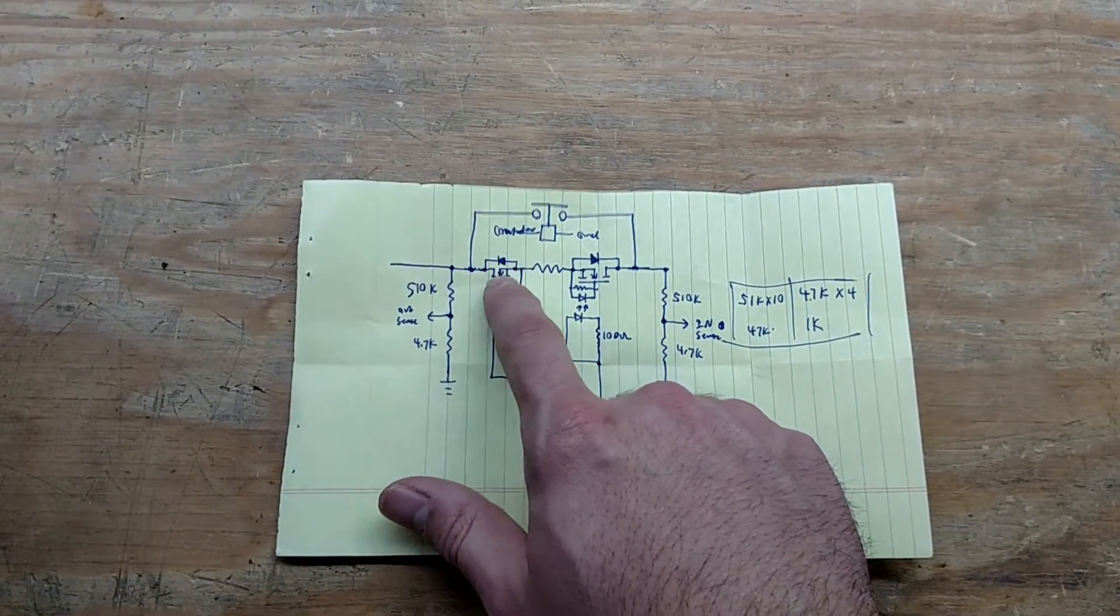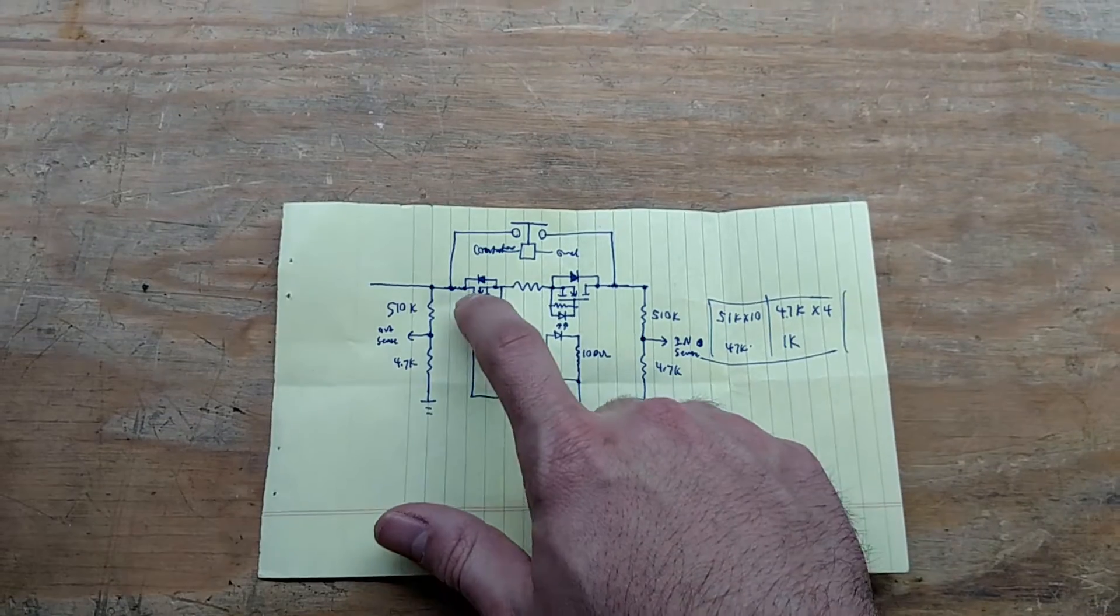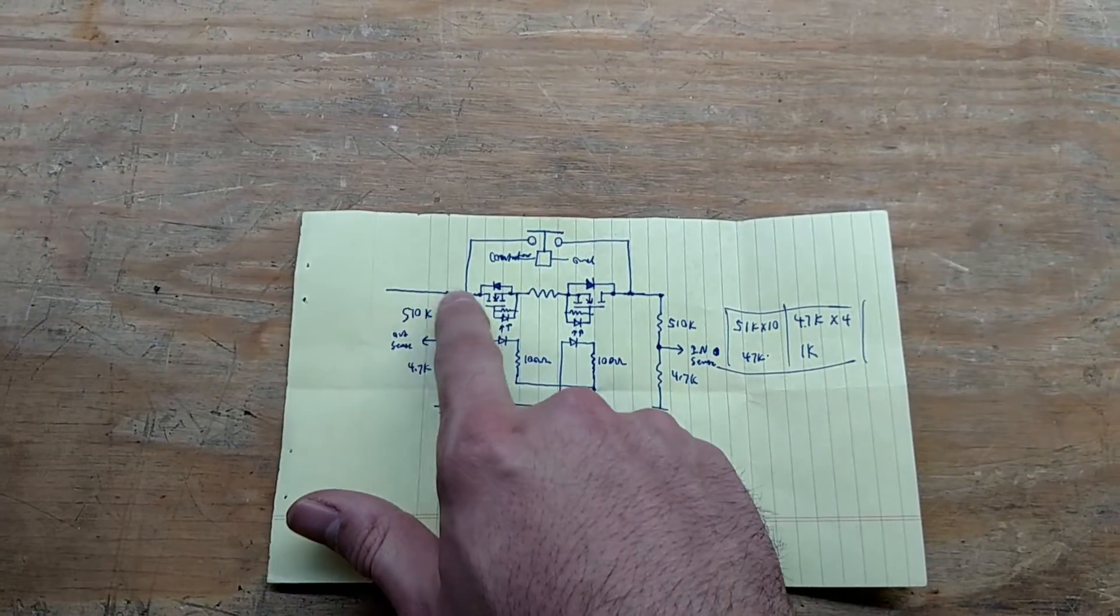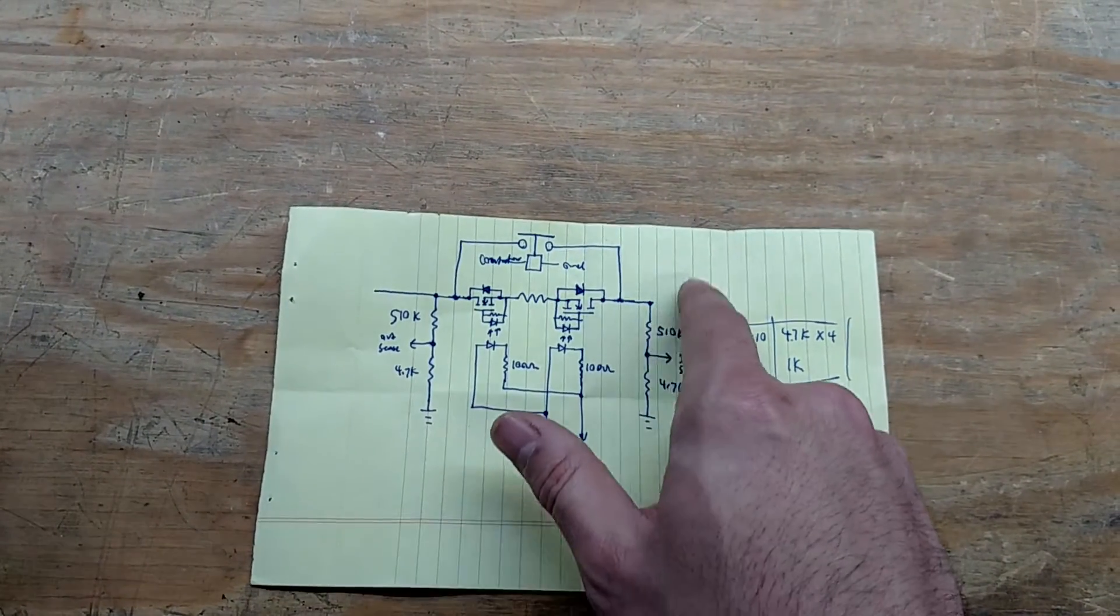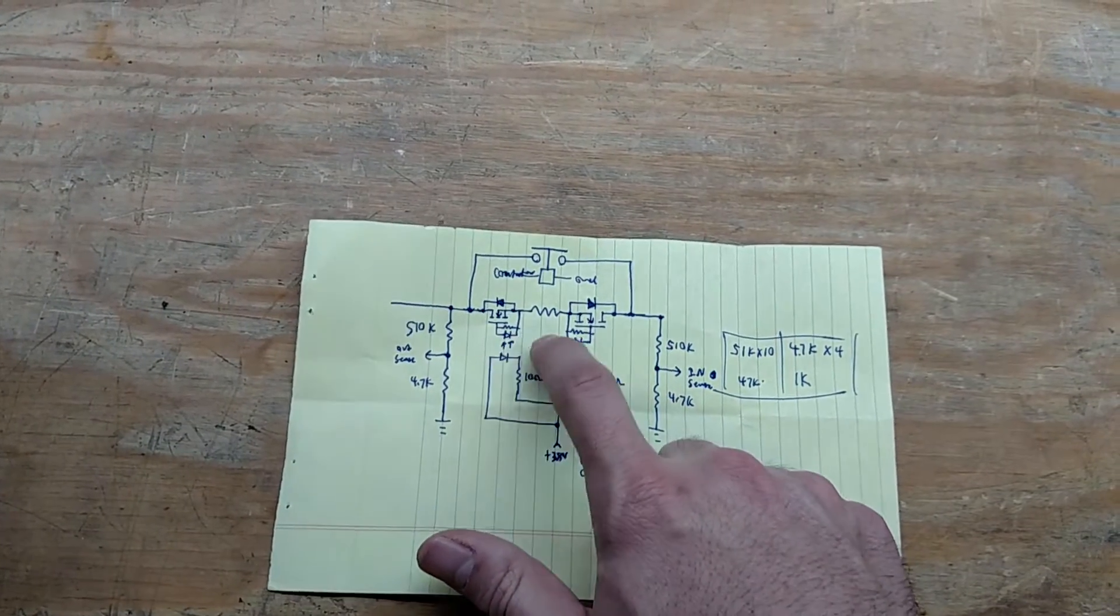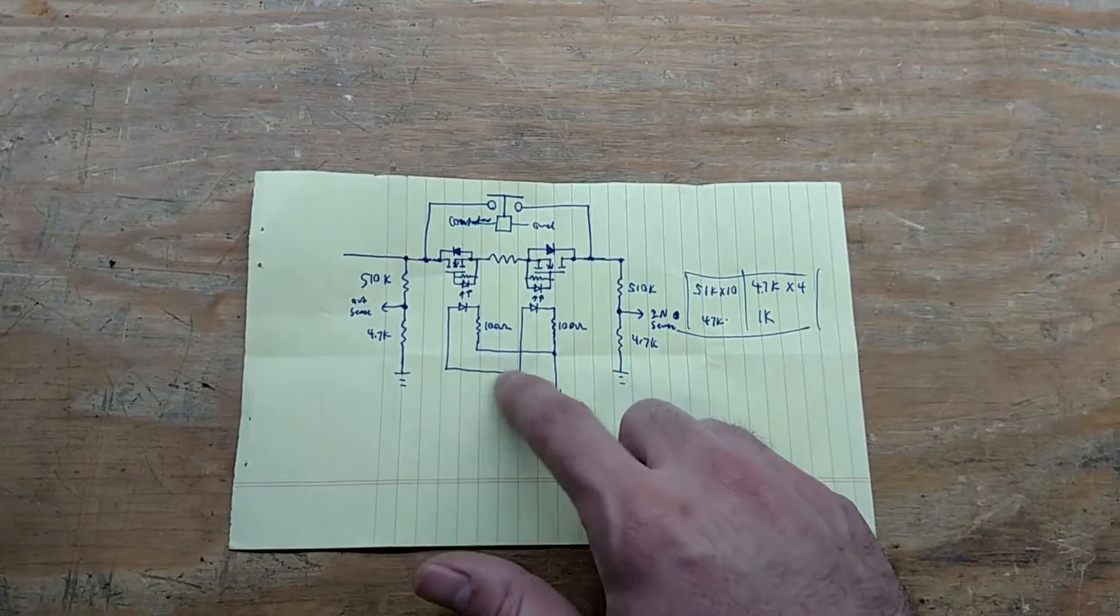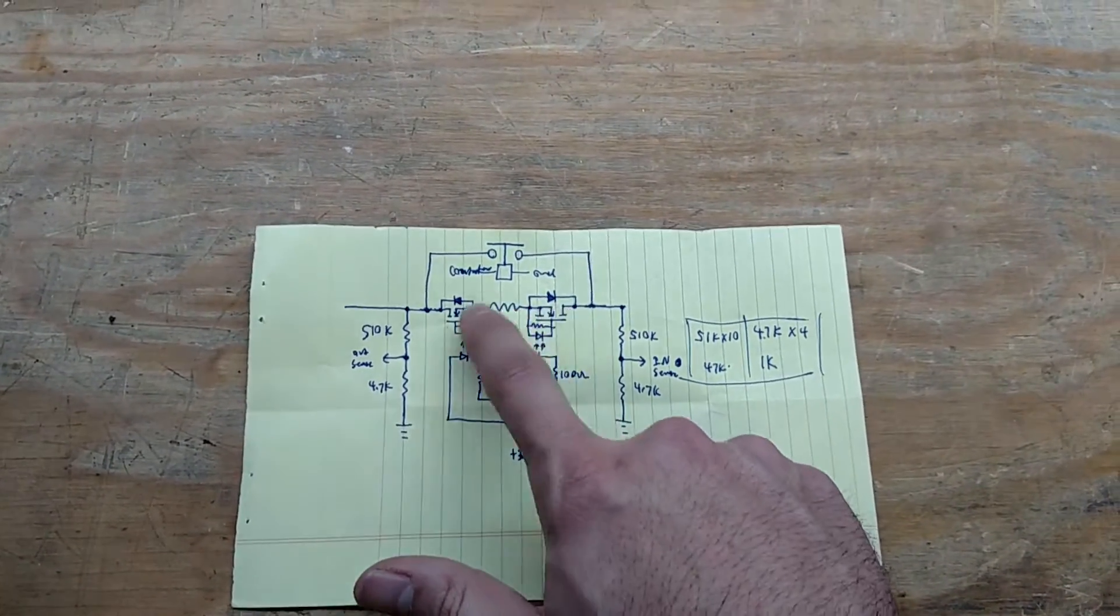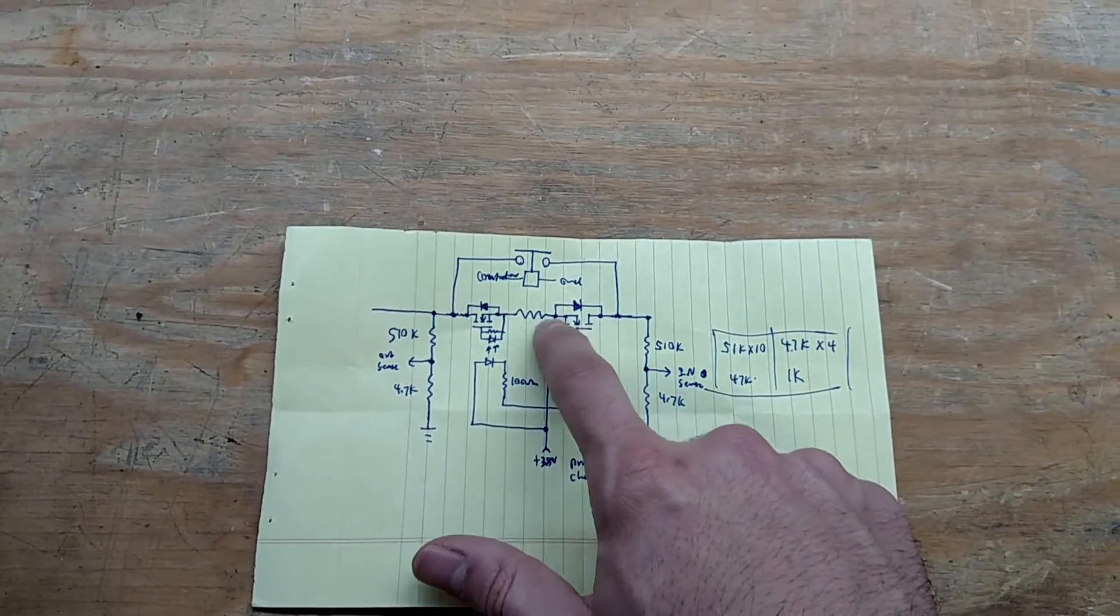You can see I've got a couple MOSFETs in here and this is the pre-charge resistor. If these guys are off, current can't go through this diode and it can't go through the contactor. If current tries to go this way it can't go through that diode. So we turn these guys on. I actually have individual control over them, but this is drawn as if it's simultaneous.